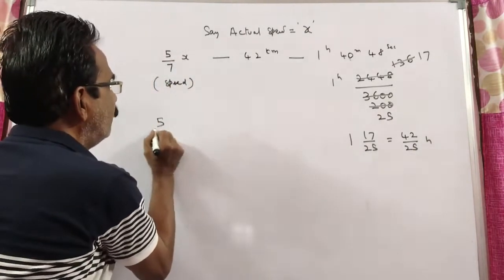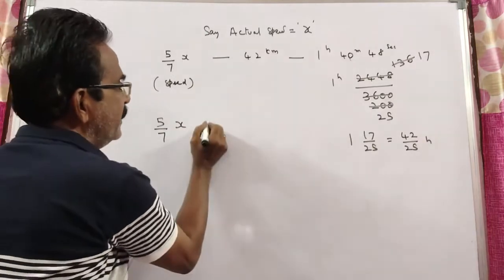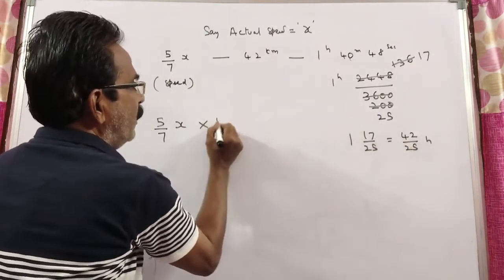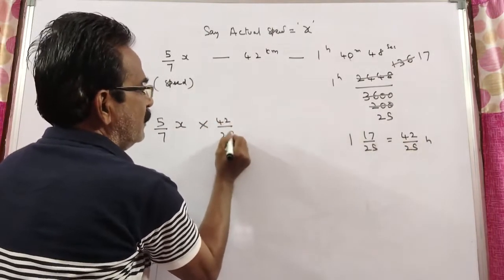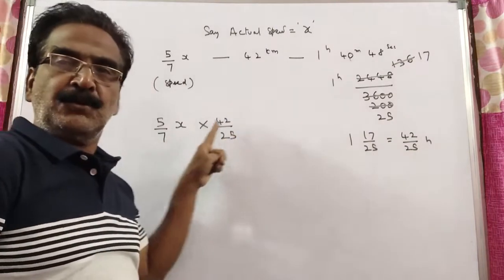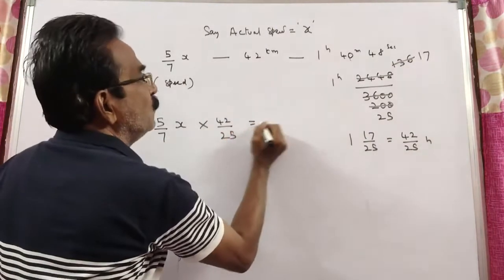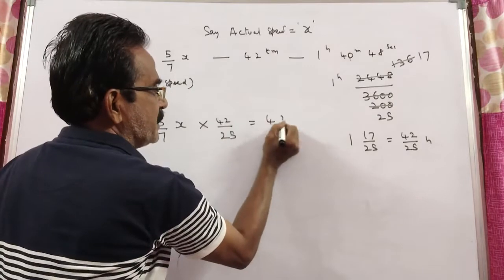Speed: 5/7 of actual speed times time, 42/25. Speed times time equals distance: 42 kilometers. So,